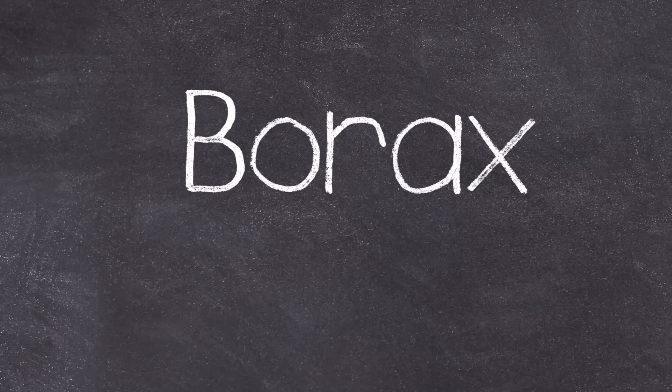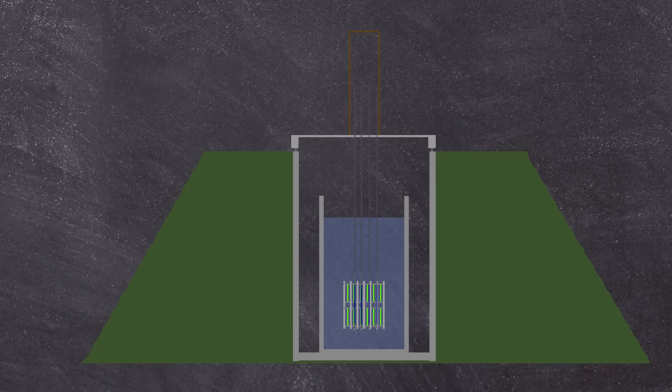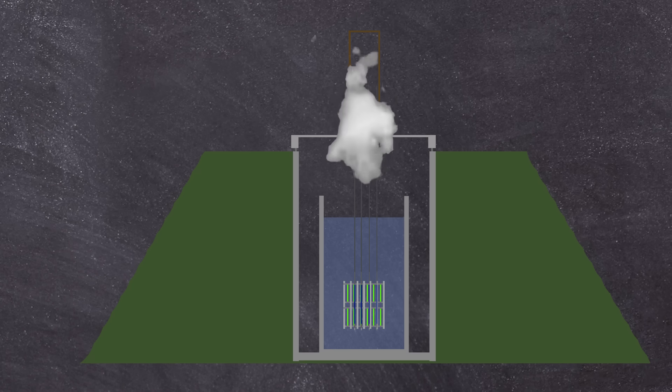It was a fairly basic design, omitting any power generation capability, and instead of condensing the coolant moderator for reuse, it would just evaporate to atmosphere. Coolant was also circulated naturally through free convection. The reactor was constructed in sections at Argonne, and shipped in the spring of 1953, to be put together like a puzzle at the National Reactor Testing Station in Idaho, not far from the EBR testing area.